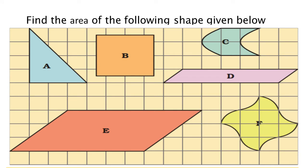Shape E is here. Now, shape F — you can find out, this is easy. So, four complete squares are there. It means four you have to count, then ignore one-by-four and take a three-by-four as a complete one.